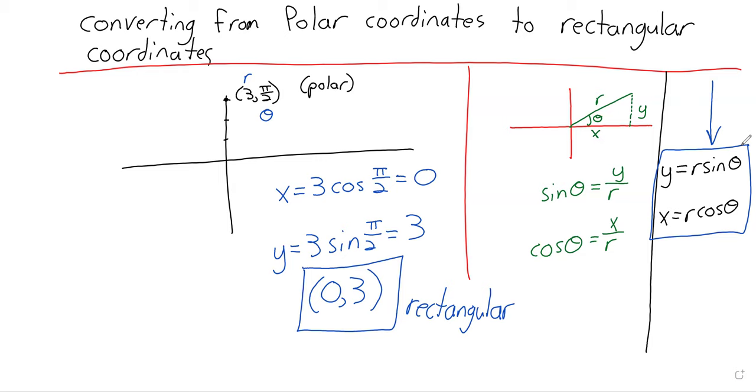Taking an equation in polar coordinates, something like r = 2 sin θ, and trying to convert it to rectangular form would be quite a bit trickier. We'll talk more about that in a later video.